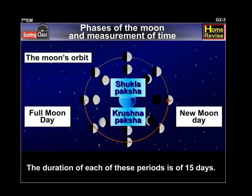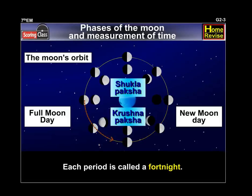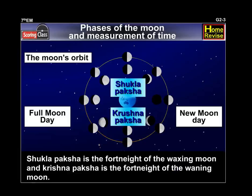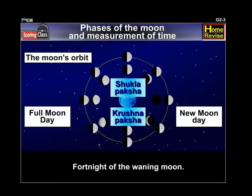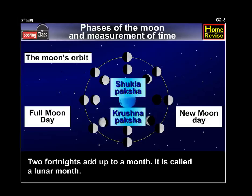The duration of each of these periods is 15 days. Each period is called a fortnight. Shukla Paksha is the fortnight of the waxing Moon and Krushna Paksha is the fortnight of the waning Moon. Two fortnights add up to a month, called a lunar month.